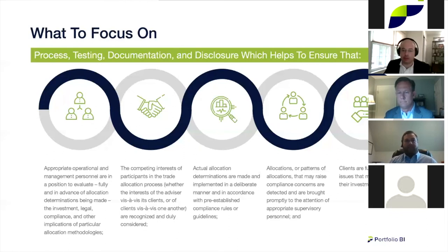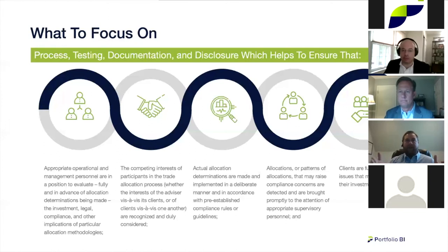Going back to the enforcement case: firms can get caught up not just through intentional misconduct but simply because regulators can play Monday morning quarterback with the benefit of hindsight. Examination periods can be 12, 18, or 24 months. If certain clients continue to receive favorable trades over that period — even unintentionally — you can land in difficult situations that are hard to explain.